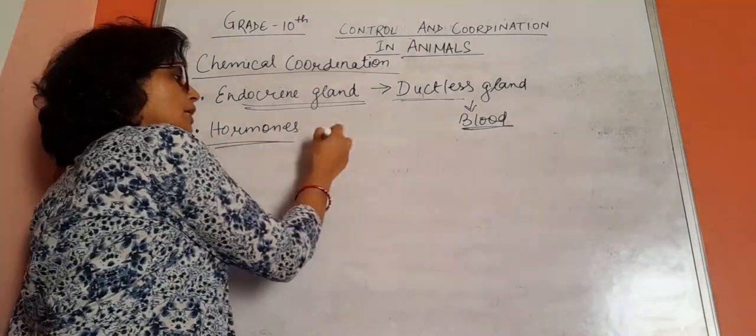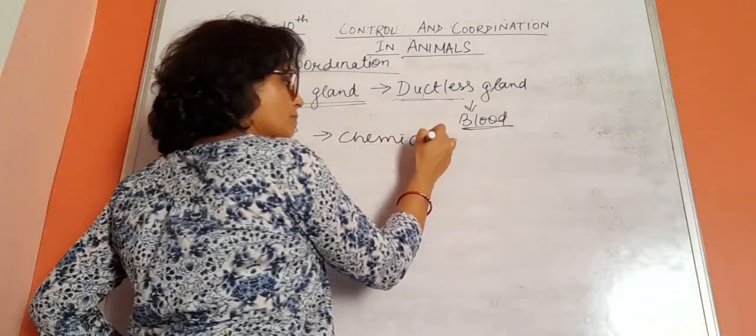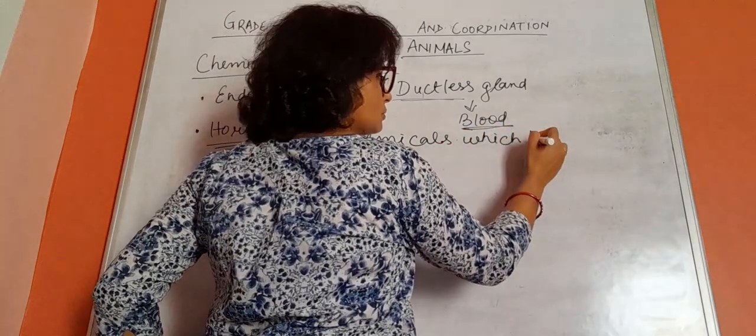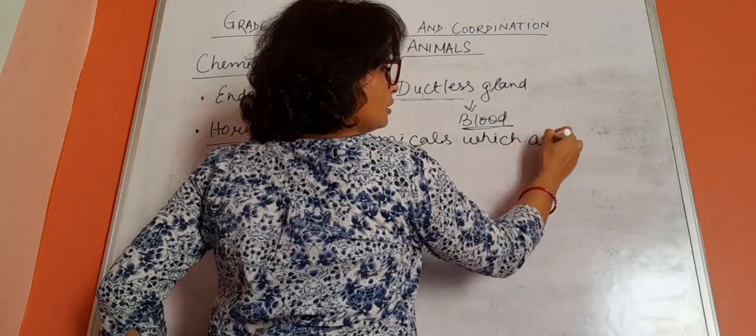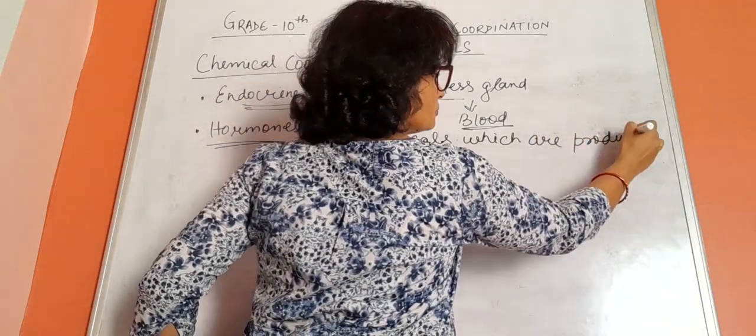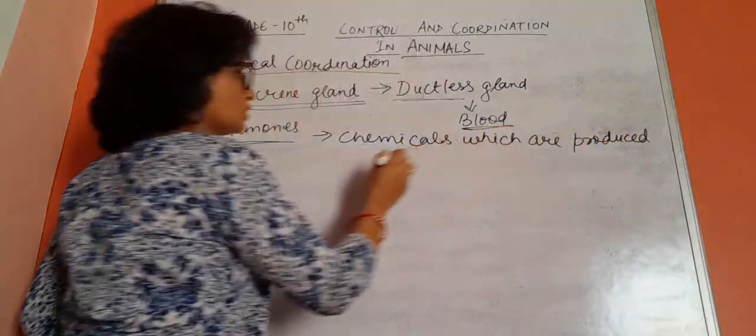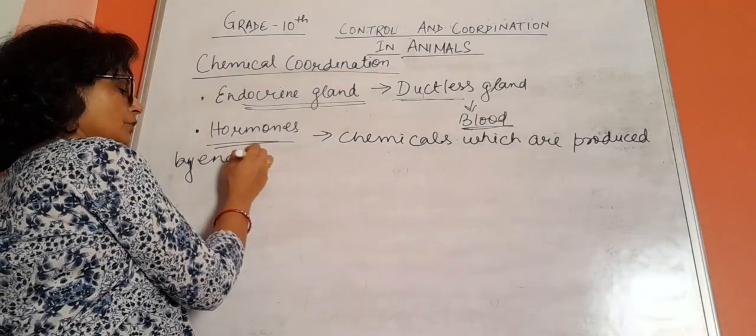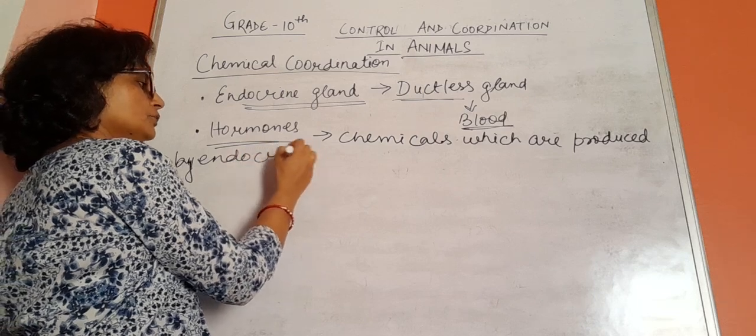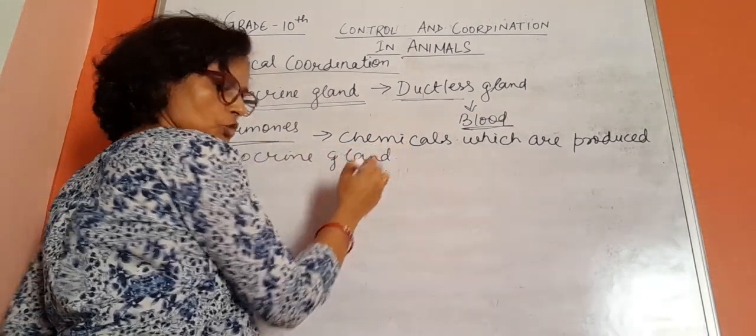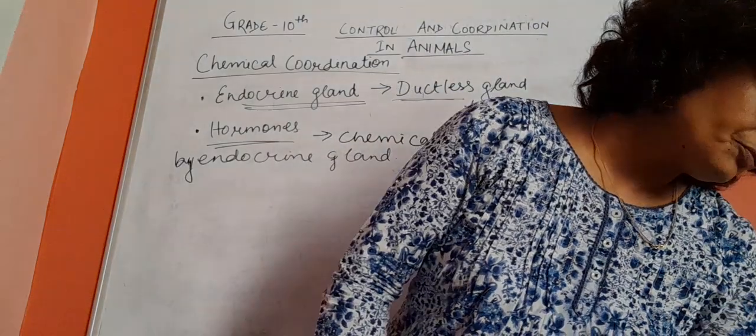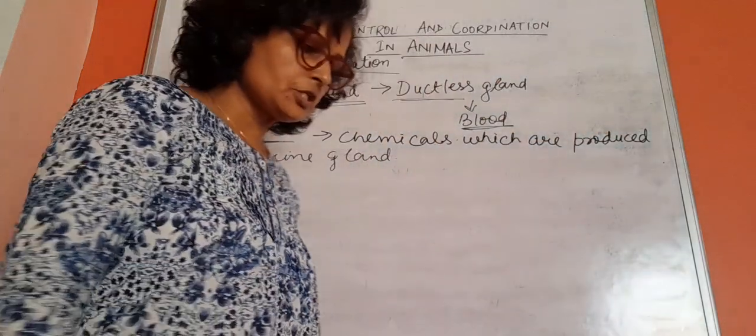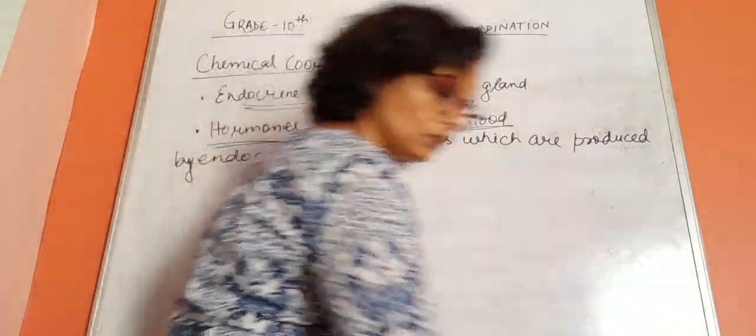What are hormones? Hormones are the chemicals or chemical substances which are produced by endocrine glands. Hormones are the chemicals which are produced by the ductless endocrine gland and regulate the biological processes in living organisms.